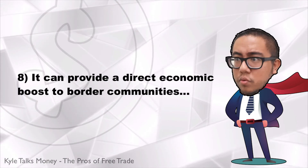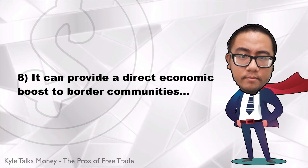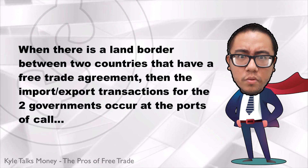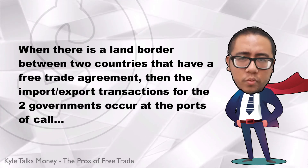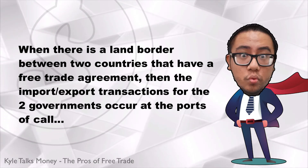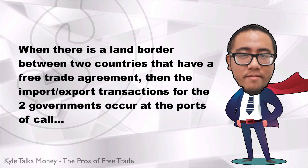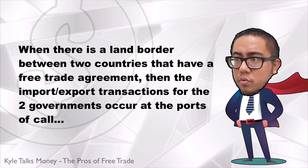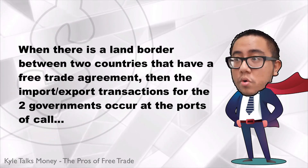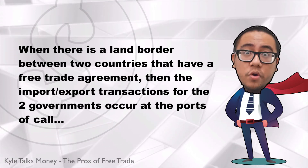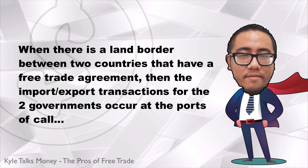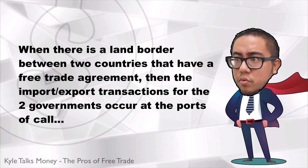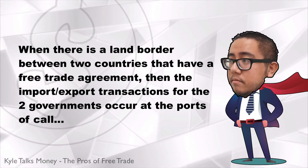Number eight: free trade can provide a direct economic boost to border communities. When there is a land border between two countries that have a free trade agreement, like the U.S. and Mexico and the U.S. and Canada, then import-export transactions occur at the ports of entry along this line. This structure has a positive effect on both local economies almost immediately. During the first year of NAFTA, the apparel and metal industries in Texas saw 13% growth because of the number of additional exports going across the border to Mexico.